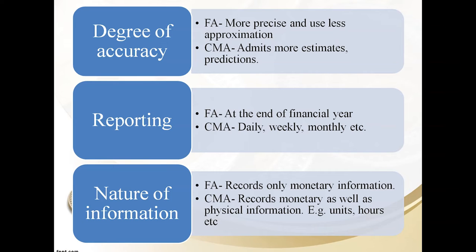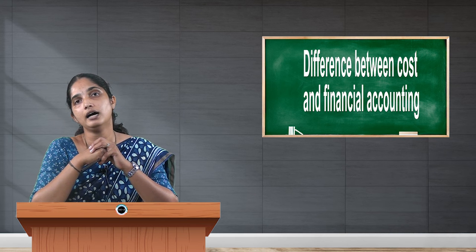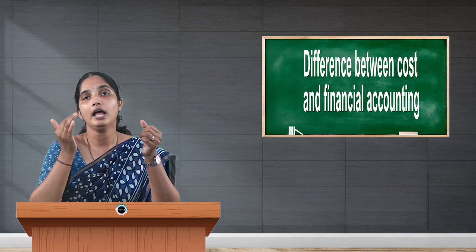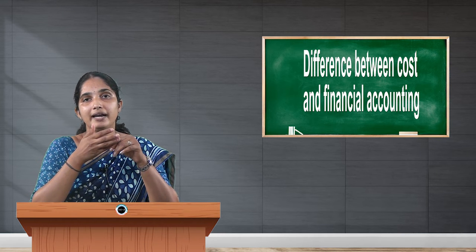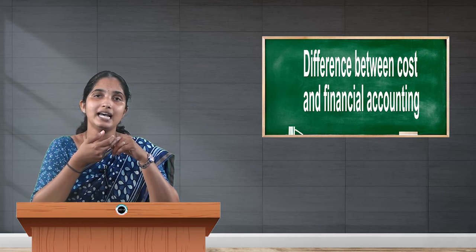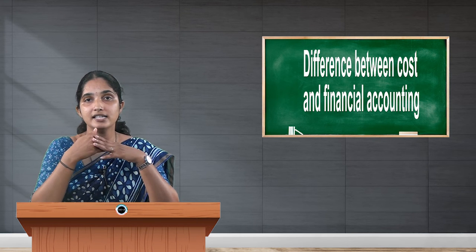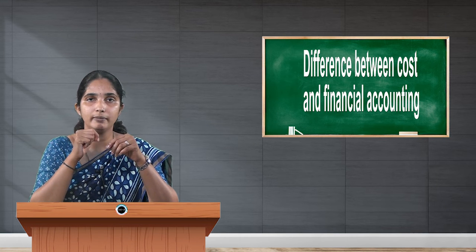Whereas cost and management accounting records monetary transactions plus non-monetary details such as the time spent by workers in the factory and the basis of payment of wages to the labor. Cost and management accounting will tell you whether the worker is paid on time rate — where the company pays wages based on time spent — for example, login at 9:30 and logout at 4:30, and salary is credited for that time, with no importance given to productivity.